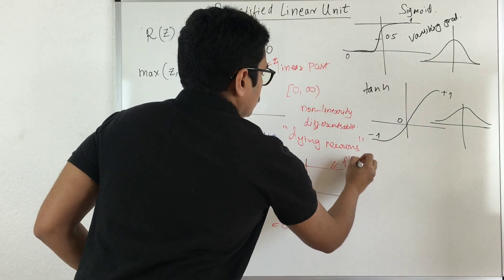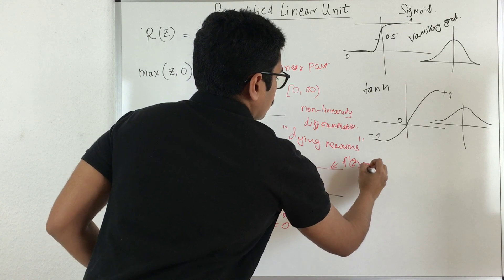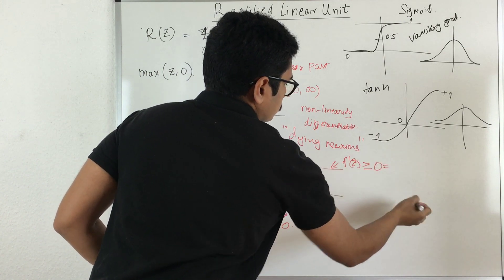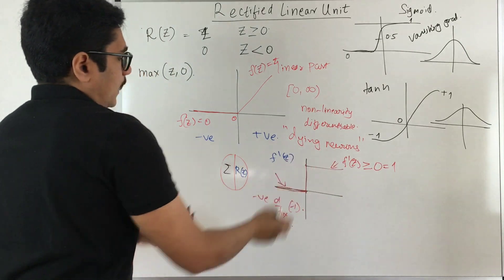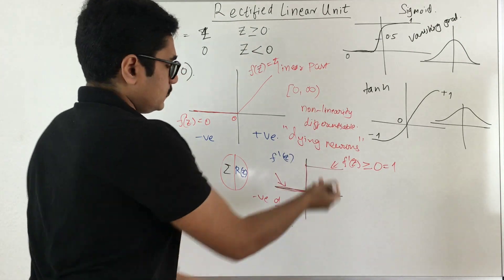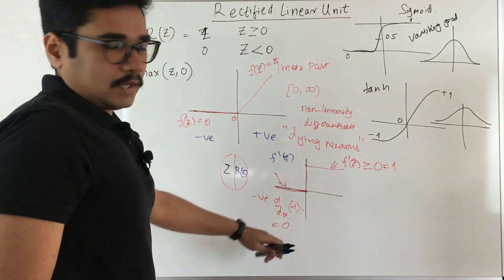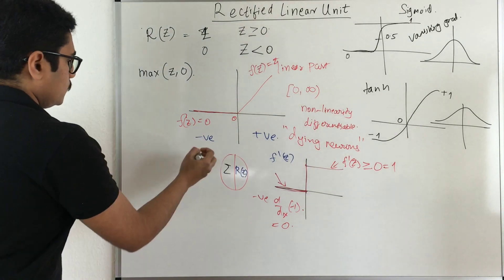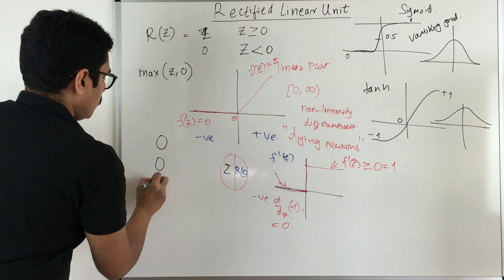So this is where for negative differentiation for negative d by dx this value is equal to 0. So suddenly your f dash x for greater than or equal to 0 it was 1, but as soon as it is less than 0, that is negative, it is falling down. So essentially if you just consider, visualize this, if you have large network of such neurons.